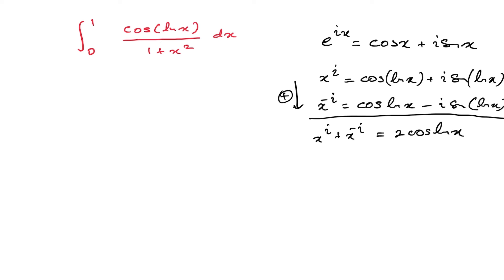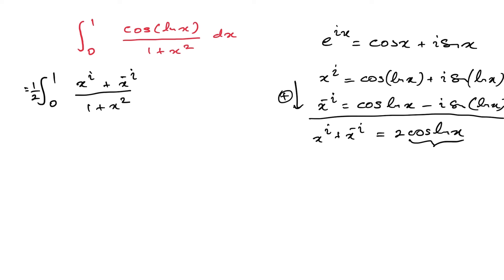Then if we add them, x to the i plus x to the minus i is equal to 2 times cosine of natural log of x. Therefore, instead of cosine of natural log of x we can plug in: one half times the integral from 0 to 1 of x to the i plus x to the minus i over 1 plus x squared dx.